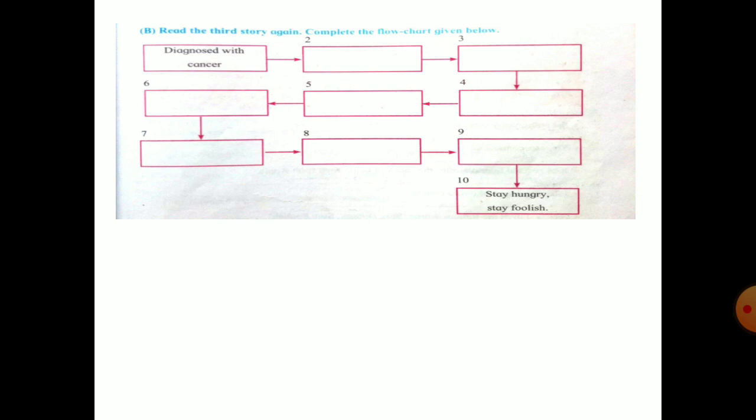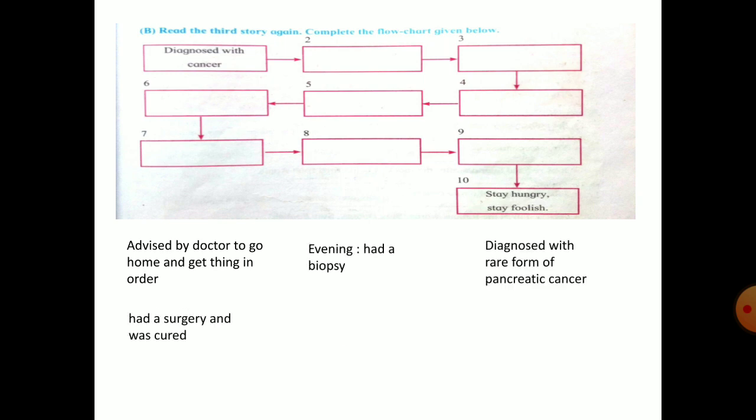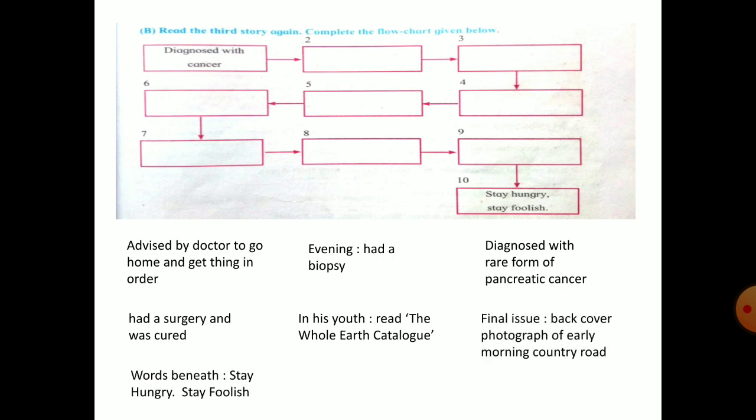Next question: read the third story and complete the flow chart given below. The third story is about death. We have to study the third story and after studying, complete the flow chart. In that flow chart we can write down: in the first box, advised by doctor to go home and get things in order, then evening had a biopsy, then diagnosed with rare form of pancreatic cancer, then had a surgery and was cured. Then in his youth he read the Whole Earth Catalog, this is the great publication of his time. Then final issue back cover photograph of early morning country road, then words beneath 'stay hungry, stay foolish', and last one is message to graduates, that is 'stay hungry, stay foolish'. This is the flow chart you can write down in these boxes.